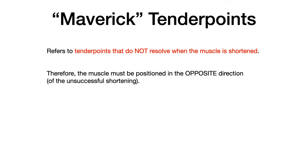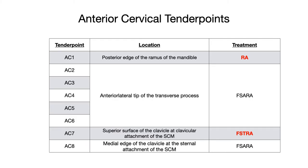Maverick tender points refers to tender points that do not resolve when the associated muscle is shortened. Counter strain treatment involves shortening the associated muscle, and when that muscle is put in its optimal position of comfort, the tender point is supposed to resolve by at least 70%. For maverick tender points, the muscle must be positioned in the opposite direction of shortening — therefore lengthening. AC1 and AC7 are mavericks because they don't follow the general rules of counter strain.